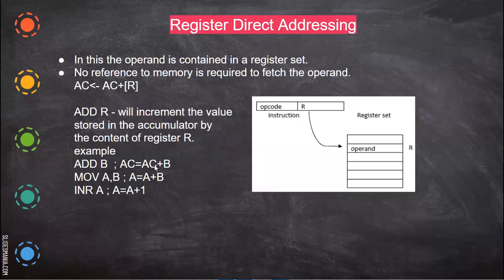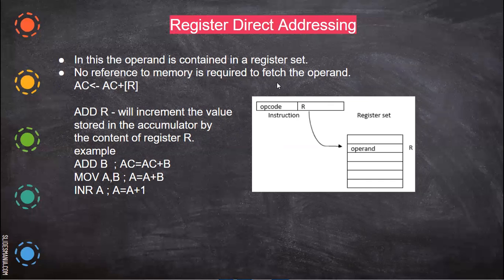Now we'll see the next one: register direct addressing. In this, the operand is contained in a register set. Instead of a memory location, the operand will be a register. So there is no reference to memory required — all these are register sets: B, C, D, H, L, and so on. So add R will increment the value stored in the accumulator by the content of register R.